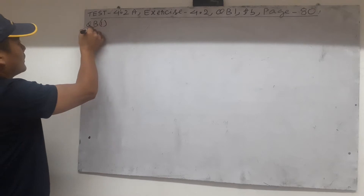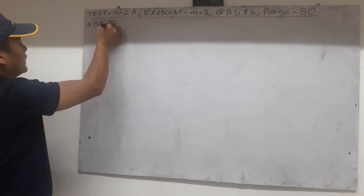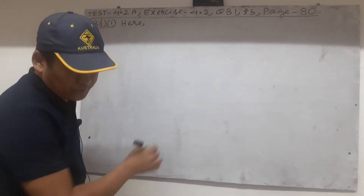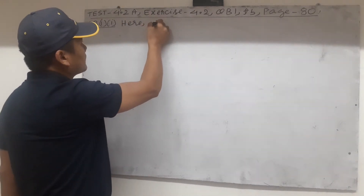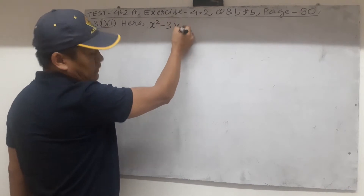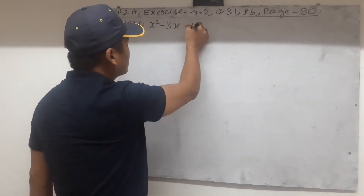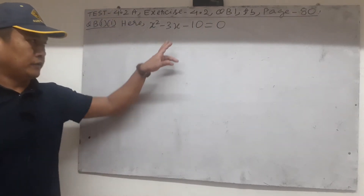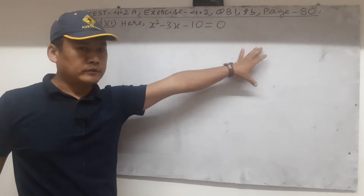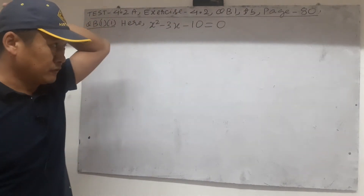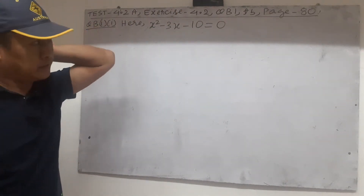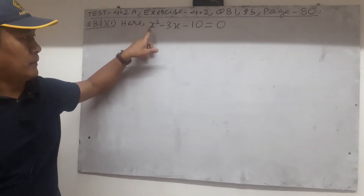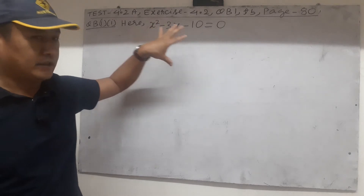So B1 subheading 1. Here we are given x squared minus 3x minus 10 is equal to 0. So we have to solve this quadratic equation by factorization. Now by factorization we mean, how do we do that? So let us closely observe. First thing we keep in mind is the power of the variables are in descending order usually.